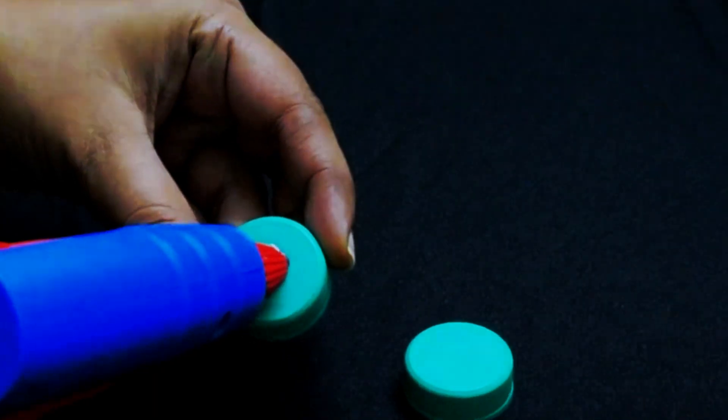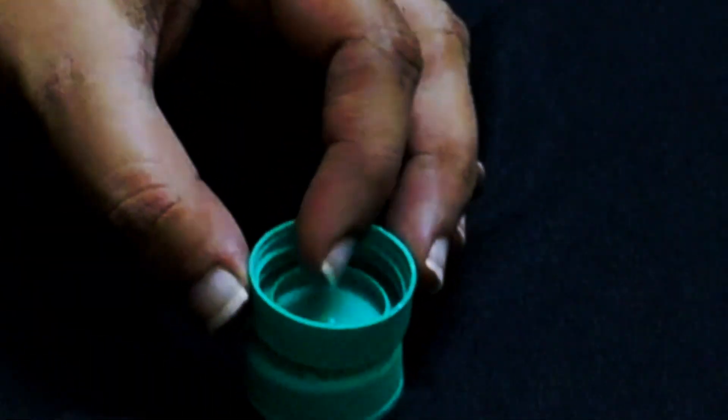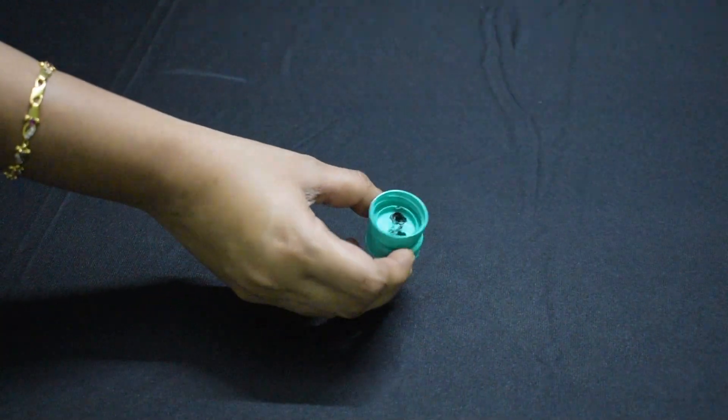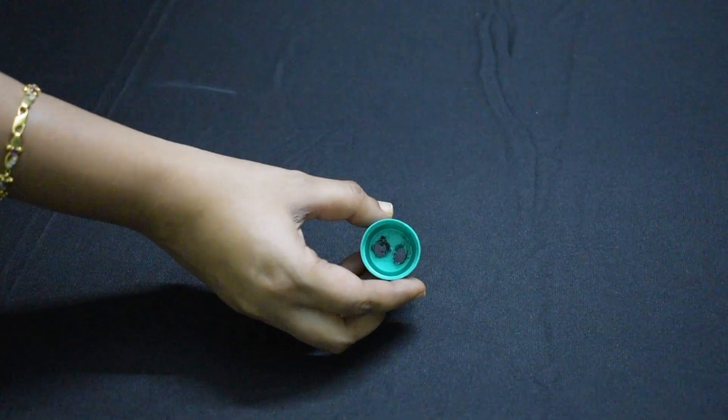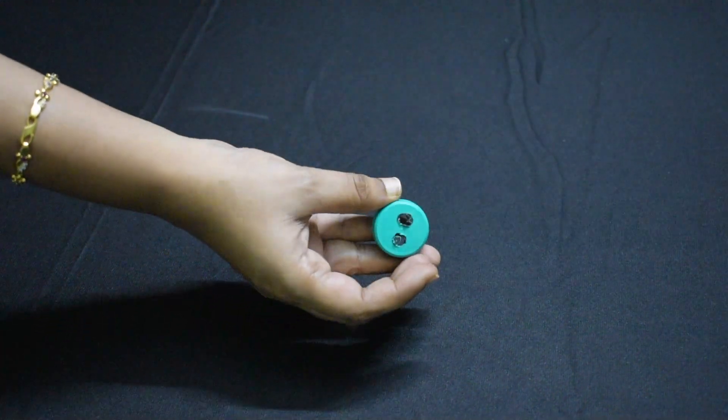We will start by taking two of the bottle caps and using the glue gun to stick them together like this. Put two holes side by side in the caps like this. Put similar holes in the third cap also.